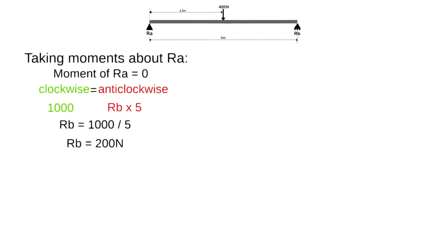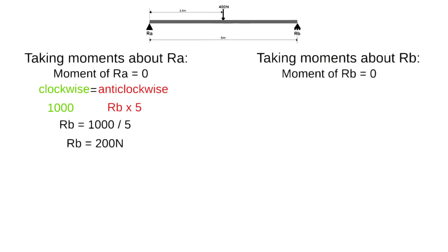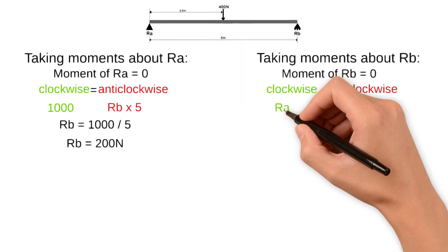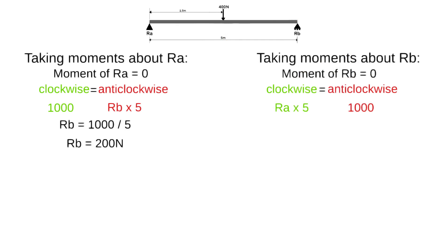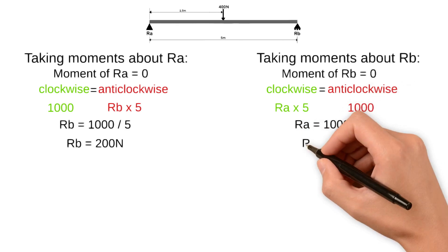Due to the symmetry of our arrangement we could argue that RA is also equal to 200 newtons, but to prove this let's take moments about point RB. Since the distance of the reaction force at RB is zero the moment of RB must also be zero. The only anti-clockwise moment is caused by the 400 newton load at a distance of 2.5 metres, giving 1000 newton metres. The only clockwise moment is the support reaction RA at a distance of 5 metres. Since the beam is in equilibrium we can transpose to find RA by dividing 1000 by 5 which gives us 200 newtons.